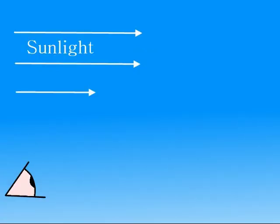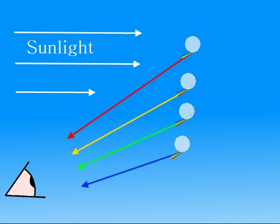This means that when you have a huge collection of raindrops, some of them will return a red color to your eyes, others a yellow, green or blue color. The result is a rainbow.